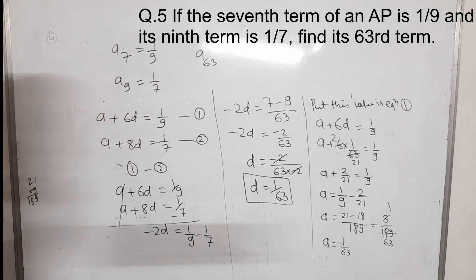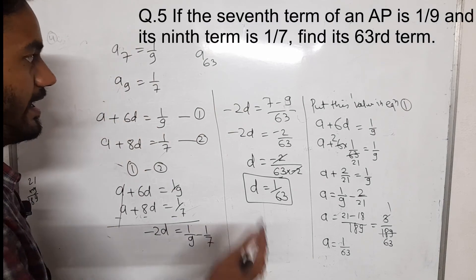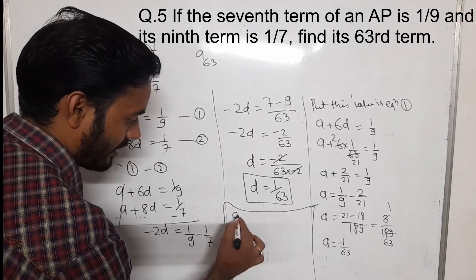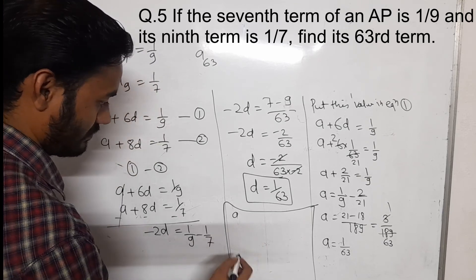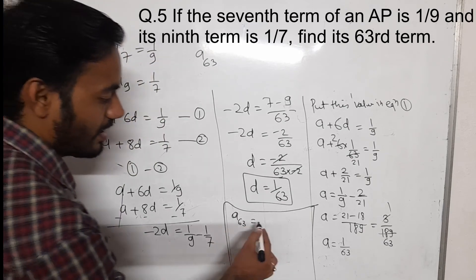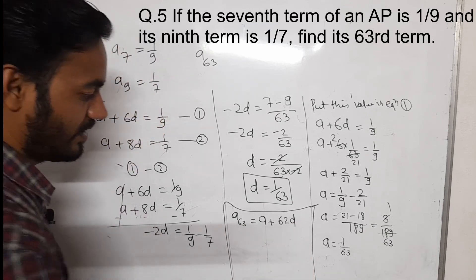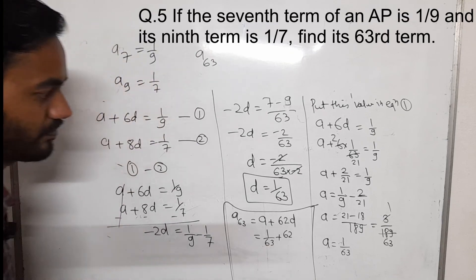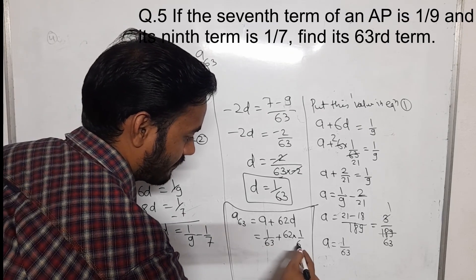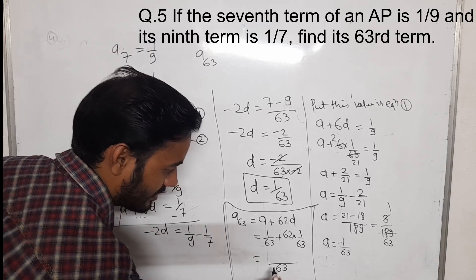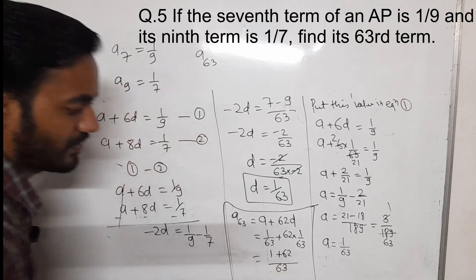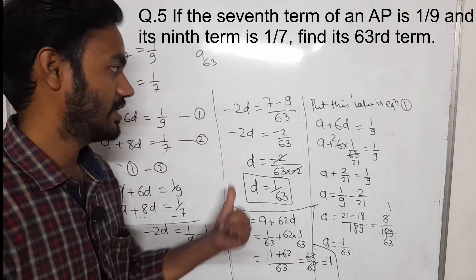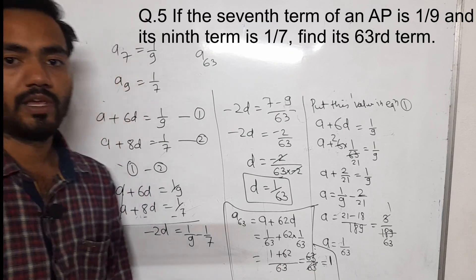Now we have to find A63. It becomes A plus 62D: 1 by 63 plus 62 into 1 by 63. Taking LCM of 63: 1 plus 62 equals 63 by 63. These cancel, and we get the answer 1. So the 63rd term of this AP will be 1. Thank you for watching.